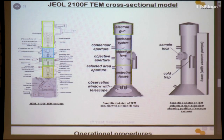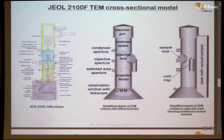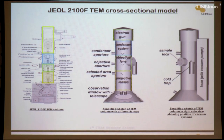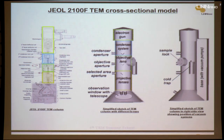For understanding the TEM operation, I simplified the cross-section of the JEOL 2100 FEG TEM into a block diagram: electron gun, condenser lens system, aperture, objective lens, objective lens aperture, selected area aperture, projector lens, and observation system. Today's afternoon demo will be conducted on this machine. The vacuum system stays at the back, and we have liquid nitrogen to fill for reducing contamination and heat in the column.